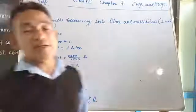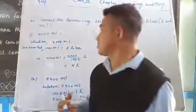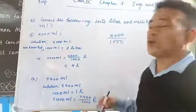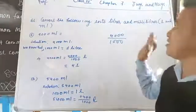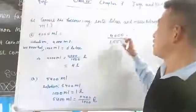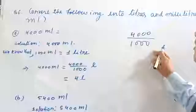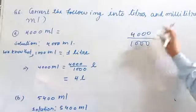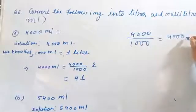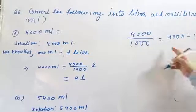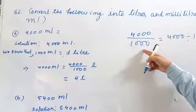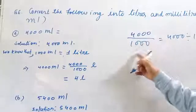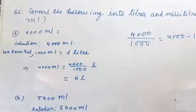4000 ml is equal to 4000 divided by 1000. Many students are confused when they see this written as a fraction. Fraction me likha hua hai — iska matlab kya hai? Iska matlab hai 4000 ko divide karna hai 1000 se. It means divide is happening. Which number is being divided? 4000 is being divided by 1000.